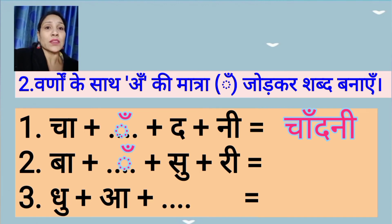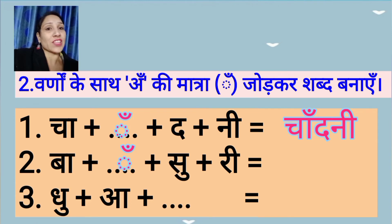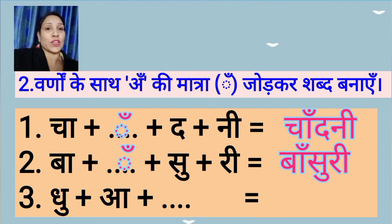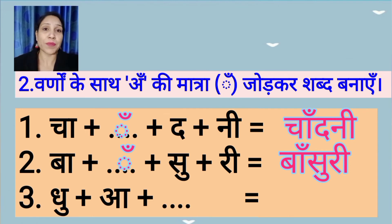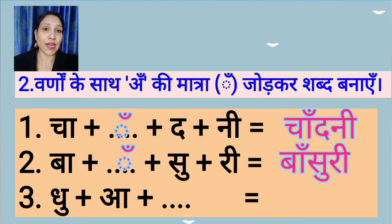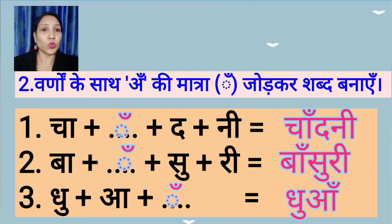The next word is 'ba-su-ri' — here a blank space is given and you have to add un ki matra to get 'bansuri'. You will write 'bansuri' here. The next one is 'dhu-a' — add un ki matra in the blank space to get 'dhuaan'. You will write 'dhuaan' here.